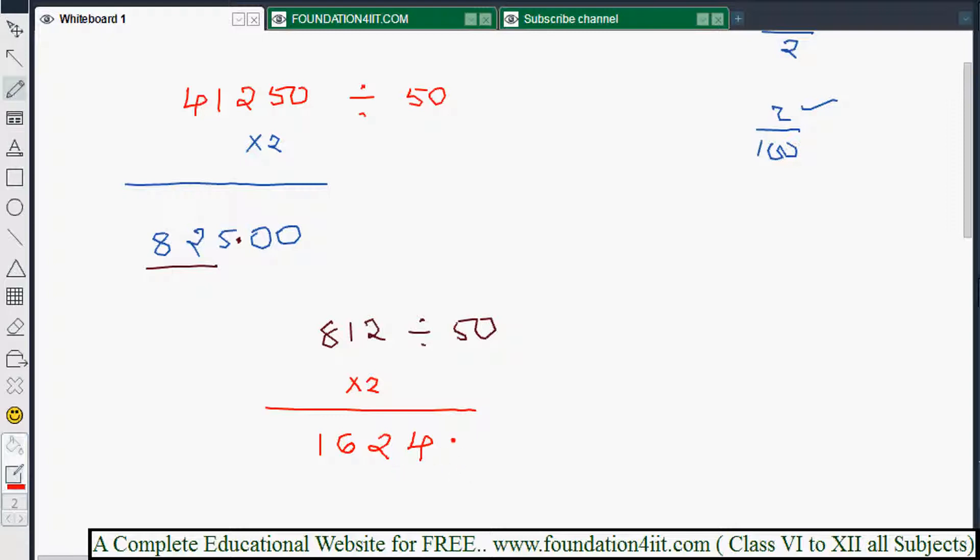1624, or from right side just leave the 2 decimal places towards your left and keep the point. So 16.24 is the answer. Instead of dividing by directly 50, just multiply with 2 and keep the point from right side before these two points. That means 1's place and 10's place you leave it and keep the point.